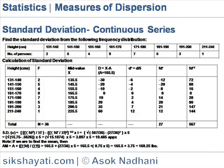Next, we compute standard deviation from a continuous series. Find the standard deviation from the following frequency distribution. The first row shows the range of heights. The second row shows the number of persons who fall between these height ranges.